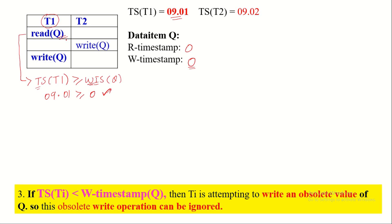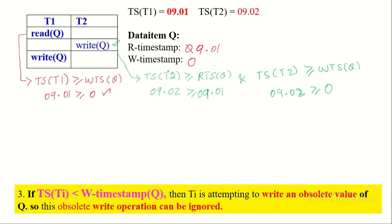Let us apply the rules to each operation. The first operation is read on Q by T1. For a successful read operation, the timestamp of T1 must be greater than or equal to the write timestamp of Q — because read conflicts with write. Applying the values: timestamp of T1 is 9.01 and write timestamp of Q is 0. Since 9.01 ≥ 0, the condition is true, so the read operation is executed and the read timestamp of Q is updated to 9.01.